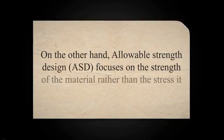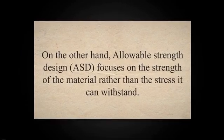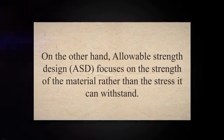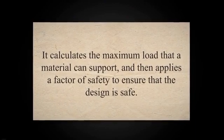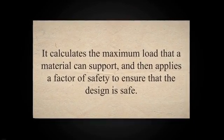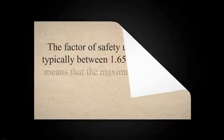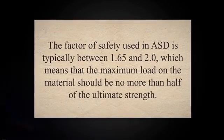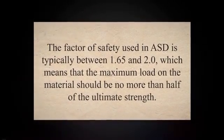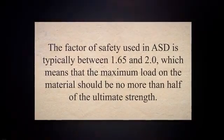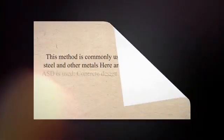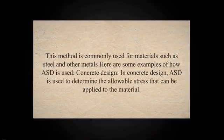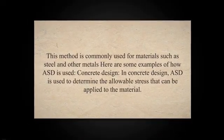On the other hand, allowable strength design (ASD) focuses on the strength of the material rather than the stress it can withstand. It calculates the maximum load that a material can support, and then applies a factor of safety to ensure that the design is safe. The factor of safety used in this method is typically between 1.65 and 2.0, meaning the maximum load on the material should be no more than half of the ultimate strength. This method is commonly used for materials such as steel and other metals.